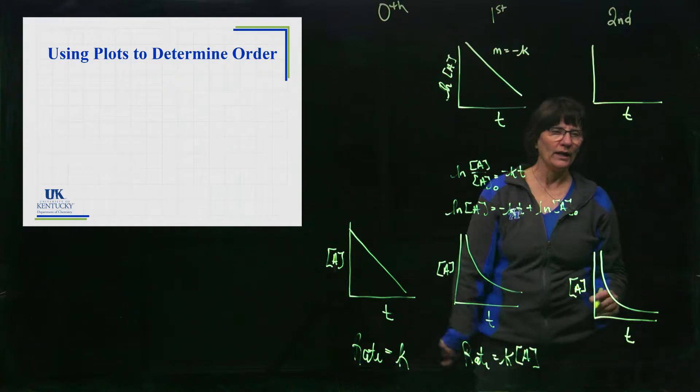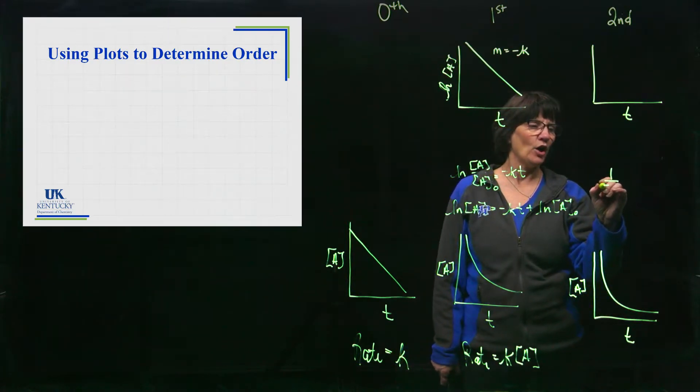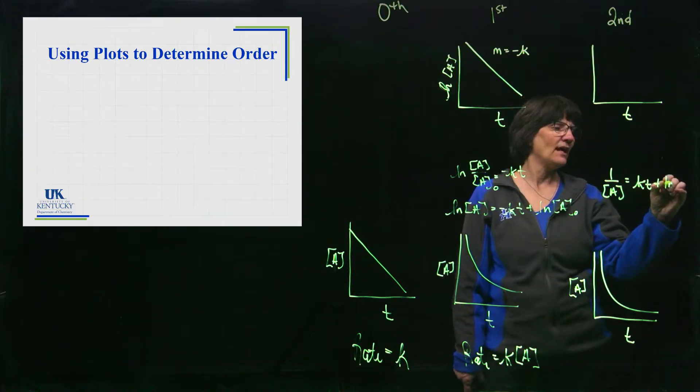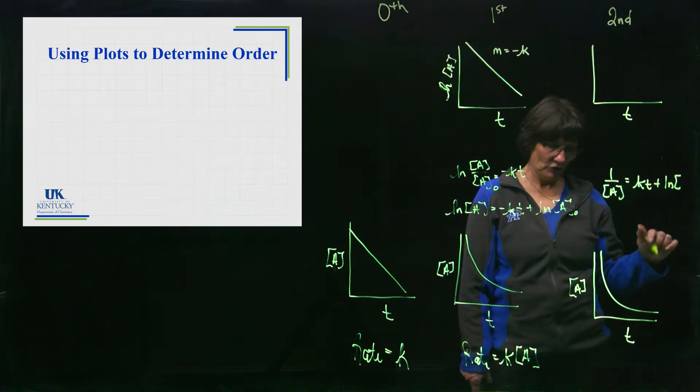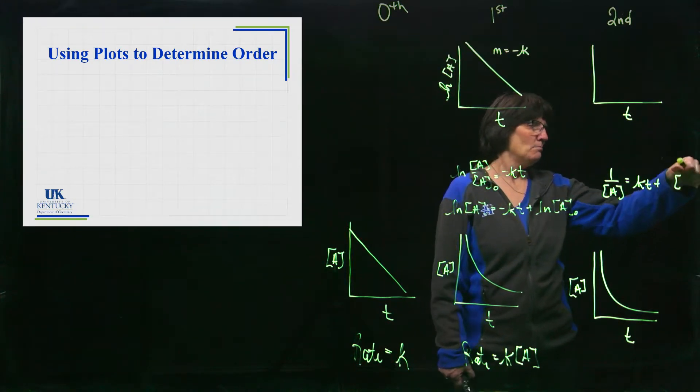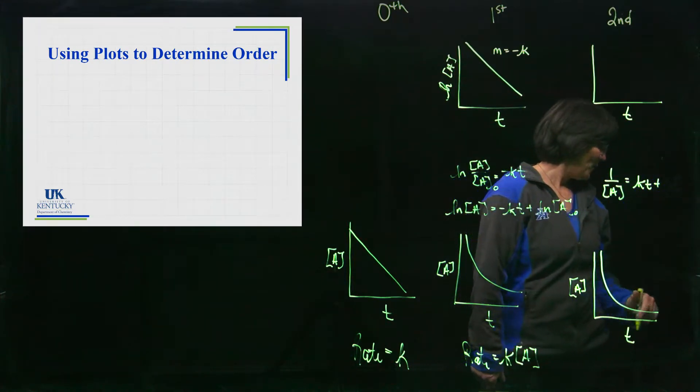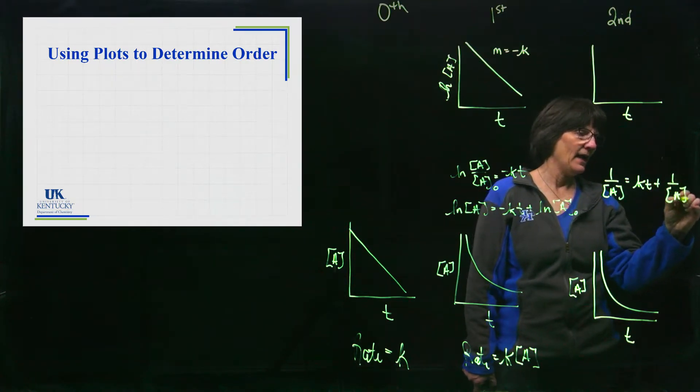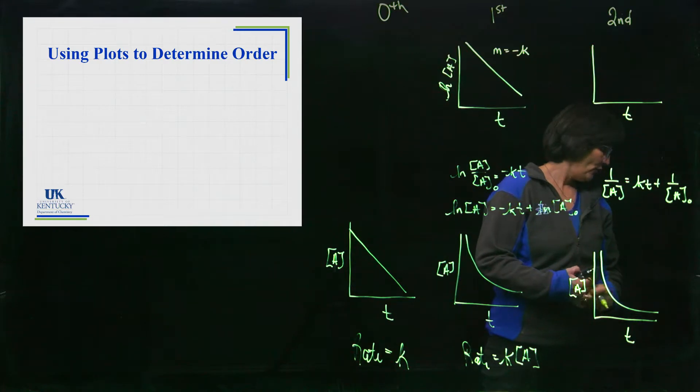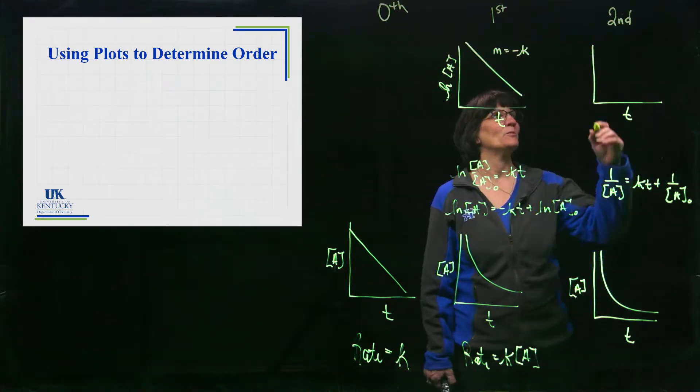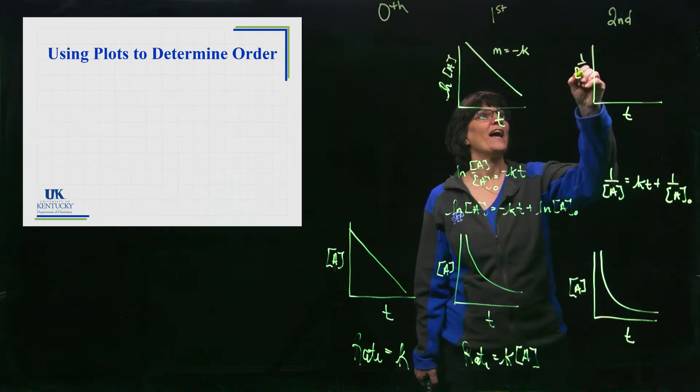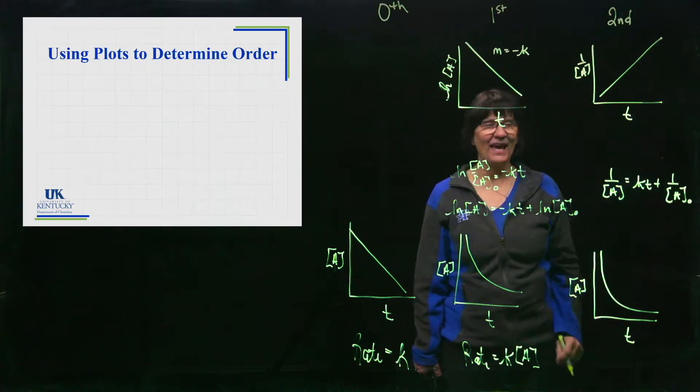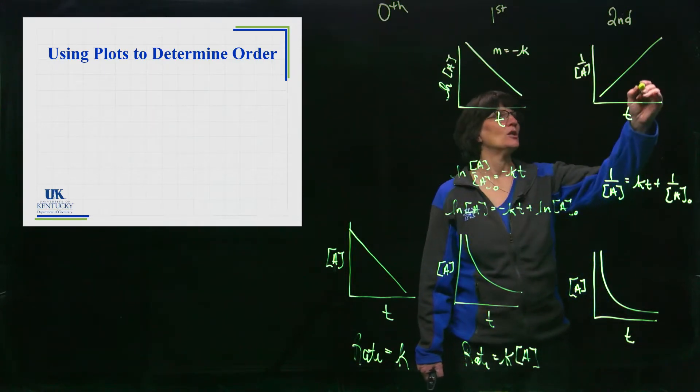Well, the integrated rate law is 1/[A] is equal to kt plus 1/[A]₀. So that's what we have for that equation. What this tells me is if I plot 1/[A] versus time, I will get a straight line, but in this case it is going to go in the up direction where the slope is equal to k. So we can obtain our rate constant from that graph.